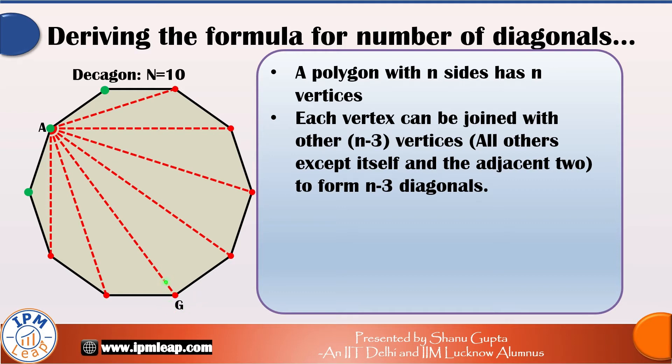So all we need to do is divide this count 70 by 2 to get our actual number of diagonals. Therefore, a decagon will have 70 divided by 2, that is 35 diagonals.